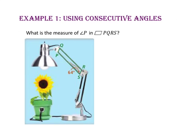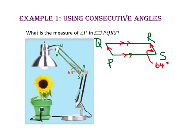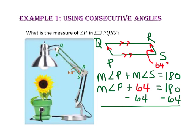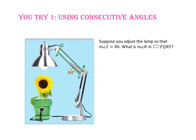In Example 1, we will be using consecutive angles. What is the measure of angle P in parallelogram PQRS? Since the quadrilateral is a parallelogram, we know the consecutive angles are supplementary. That means the measure of angle P plus the measure of angle S will equal 180. We substitute 64 degrees in for the measure of angle S, then use the subtraction property of equality, and the measure of angle P equals 116. Now pause the video and do You Try number 1.